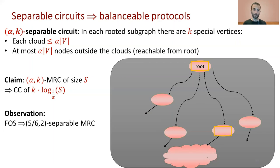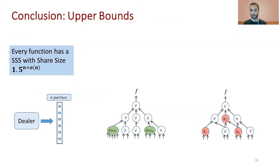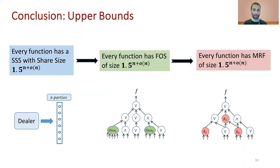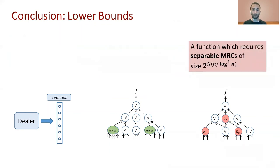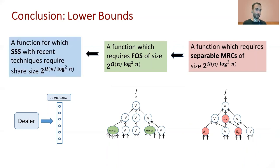To conclude: on the upper bound front, the upper bounds for secret sharing of (1.5)^n also apply to the new model of formulas over slices and then to monotone real circuits or formulas. On the lower bound front, there exists a function requiring separable monotone real circuits of size 2^{Ω(n / log² n)}, and by Rosenblum's transformation this lower bound also applies to formulas over slices. Since every recent secret sharing scheme implicitly contains a formula over slices of the same size, we obtain a lower bound of 2^{Ω(n / log² n)} for these techniques.